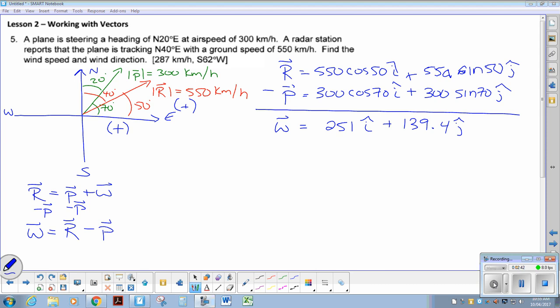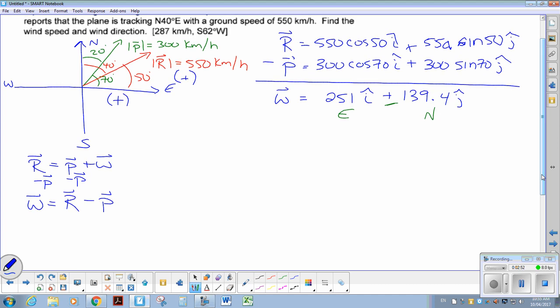So that is where the wind is pointing. Because that first component's positive, the wind's pushing east. This one's positive, so it's north, which makes sense.